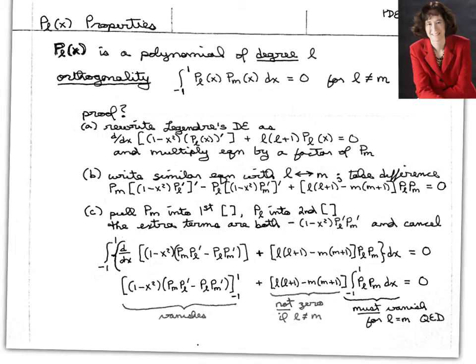Forget about the integral for the moment. Without the integral what we're saying is that the derivative of 1 minus x squared P M P L prime minus P L P M prime plus this same combination of information from above. All of that combined adds up to zero. We've just neatly pulled everything in the first part in under the derivative.